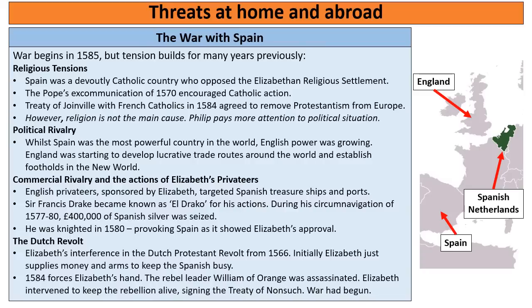In 1584 Elizabeth's hand was forced. The leader of the Dutch revolt, William of Orange — sometimes known as William the Silent — was assassinated by the Spanish. Suddenly this Dutch rebellion, which had been going for almost 20 years, looked like it was going to fail. Elizabeth couldn't allow this, so she intervened and signed the Treaty of Nonsuch, promising to send an army and money to support the Dutch. This Treaty of Nonsuch was really the declaration of war, because England was saying it would fight the Spanish to keep the Netherlands independent.